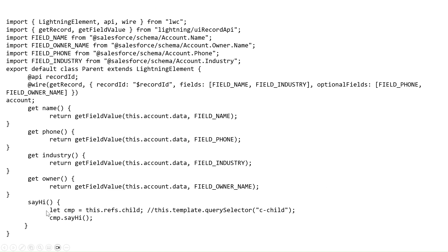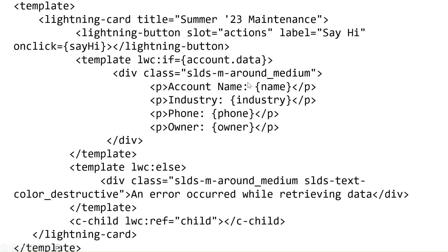Then you go to the parent JavaScript file. All you have to do is comment out the template querySelector — which was used to retrieve the child component — and replace it with this.refs.child, so it refers to the child component. I'll stay on the parent.html screen so you can read it for a few minutes, then I'll move on to parent.js. You can write down what I did here.